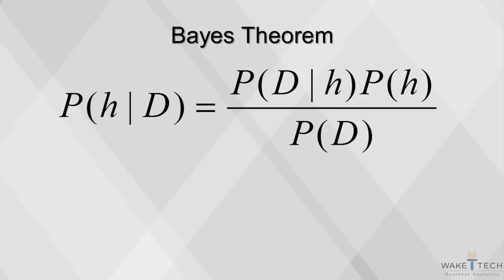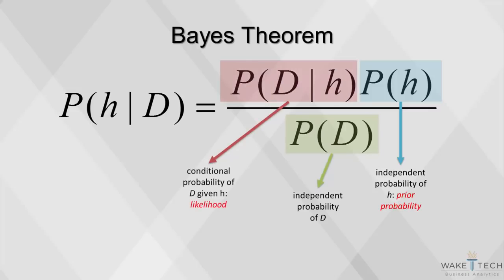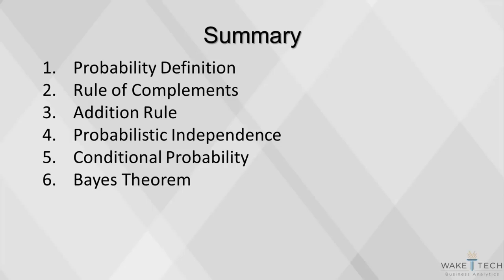The Bayes' theorem allows us to estimate posterior probabilities once we obtain new data. With it, we can measure the likelihood of event h occurring once we obtain particular pieces of evidence from data d. The parts of the theorem include the independent probability of h, or prior probability; the independent probability of d; the conditional probability of d given h, or likelihood; and the conditional probability of h given d, or posterior probability.